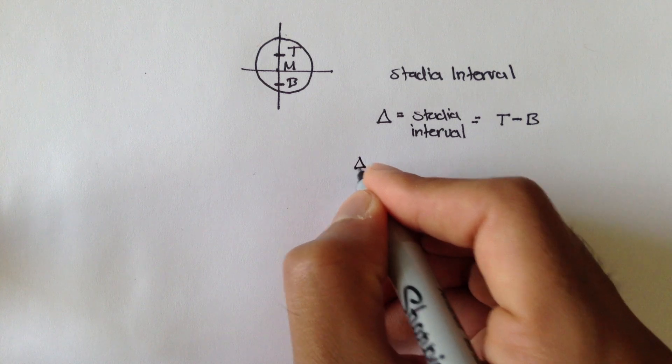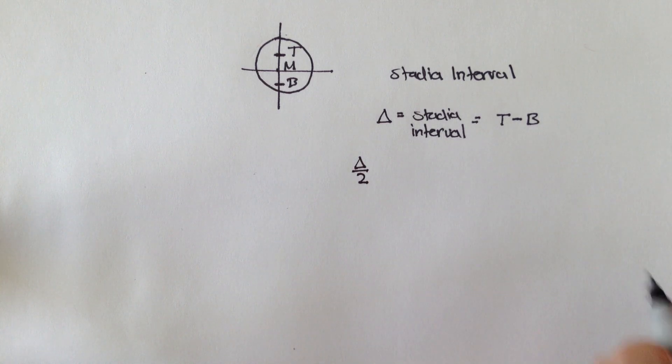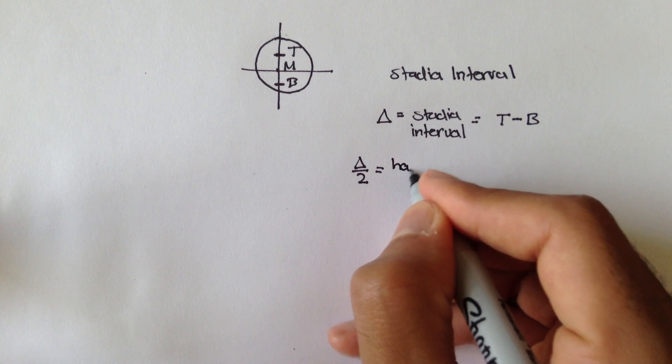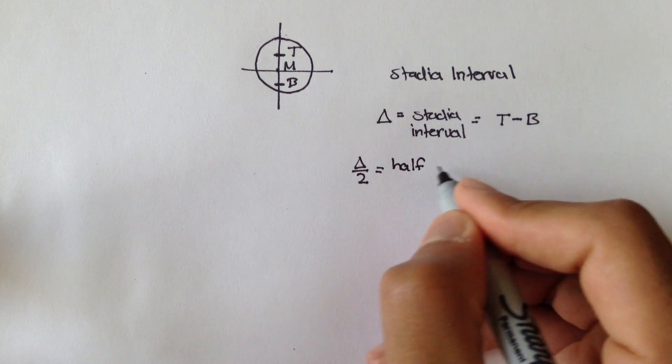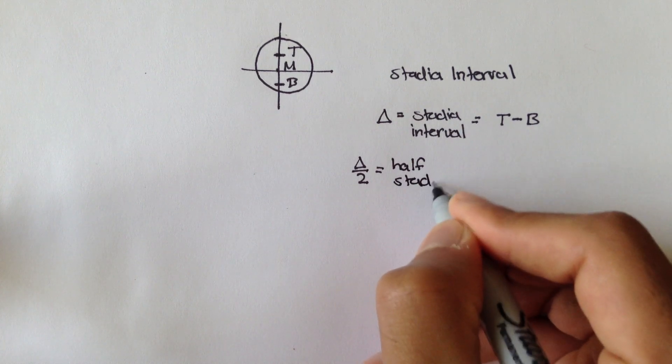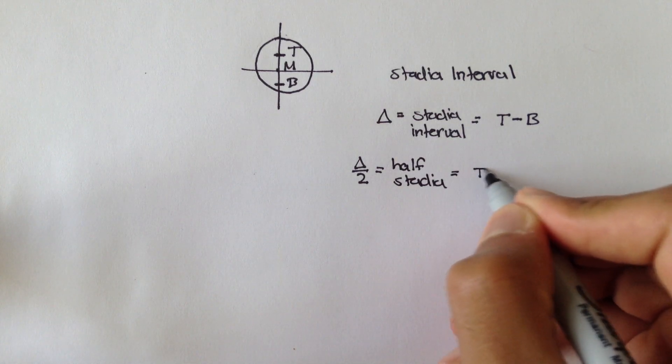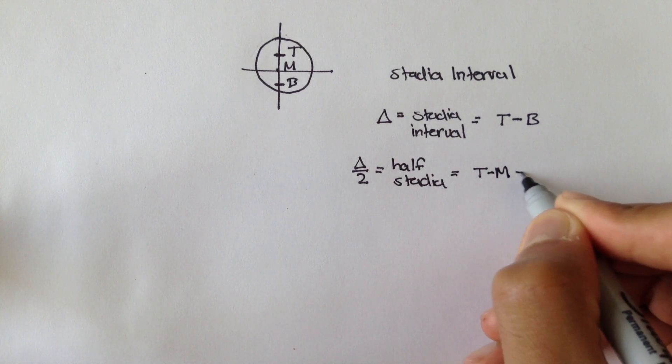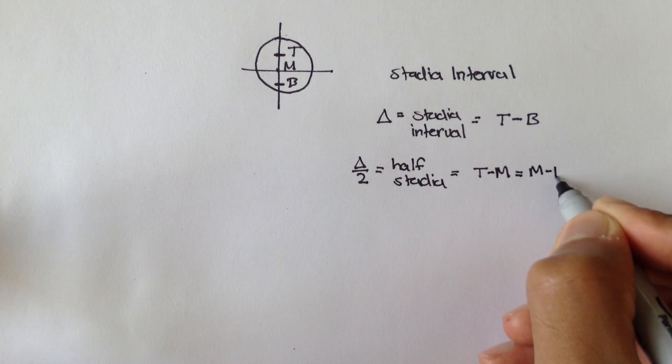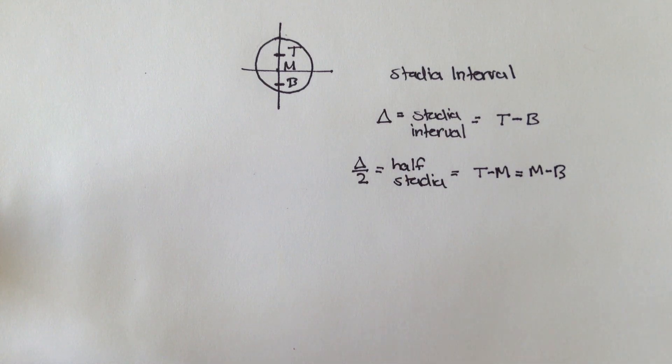Now, the half stadia, or delta over 2, which is your half stadia, is equal to your top minus bottom, which is also equal to your middle minus bottom.